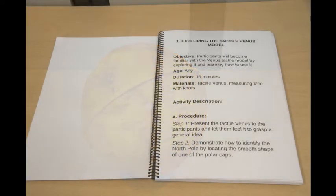In the activity book you will find suggestions of activities that you can carry out with the model. All of them follow the same structure, starting with the goal of the activity, age of the participants, approximate duration of the activity, a list of the materials you need, a description of the activity with a procedure and some suggestions for analysis, and some further information that can be given to the participants.